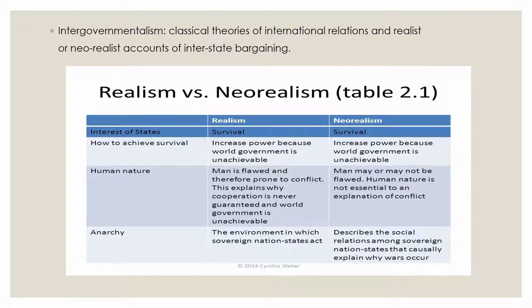Intergovernmentalism works from classical theories of international relations — both realist and non-realist accounts of interstate bargaining. This table shows the difference between realist and non-realist approaches, with four forming sectors between them: interests of states, how to achieve survival, human nature, and energies.